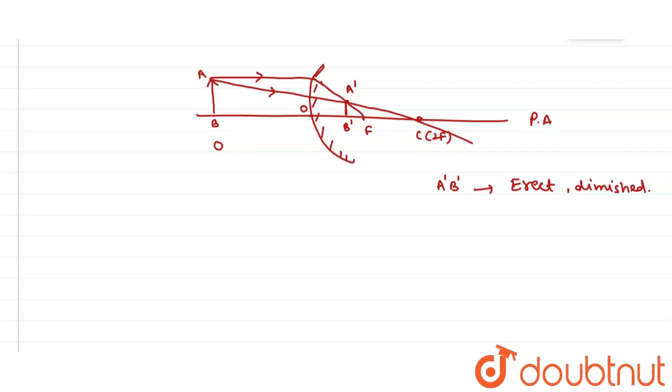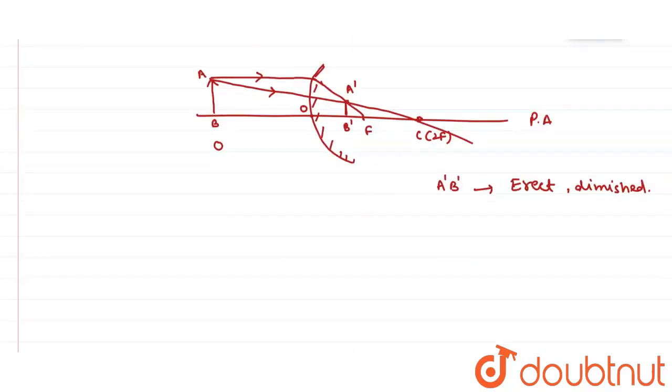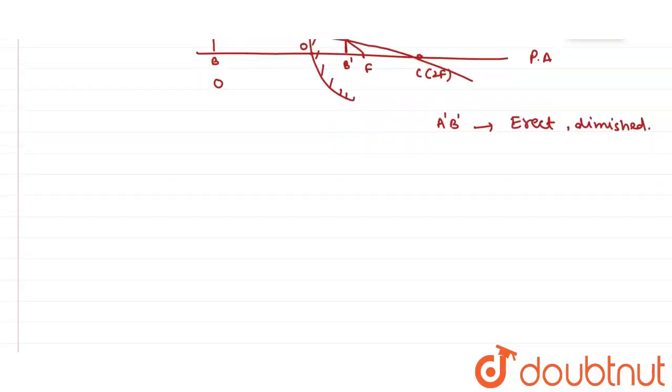So this is the proof of our answer. Now they are asking about the use of this type of mirror. This type of mirror is used as a rear view mirror by the drivers of automobiles. Used as a rear view mirror by automobile drivers.